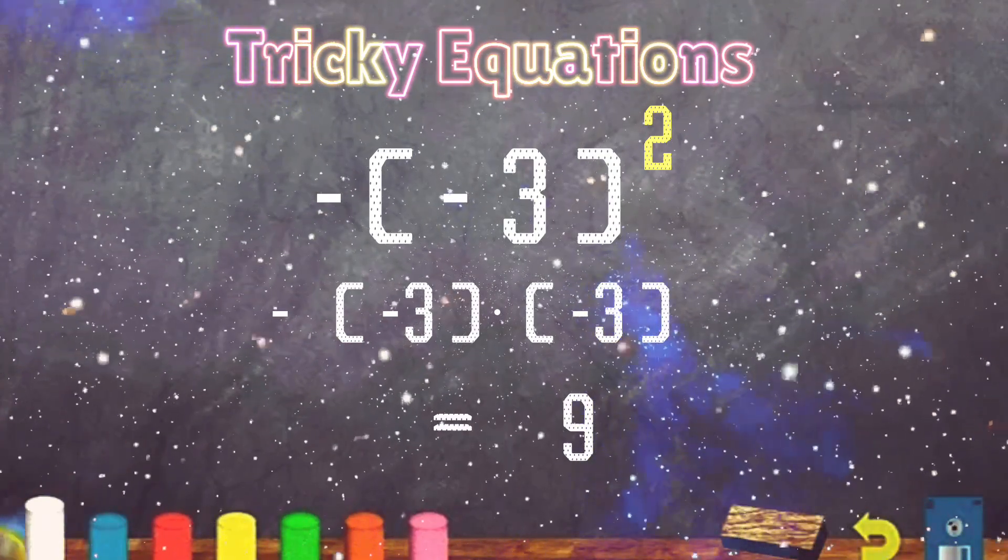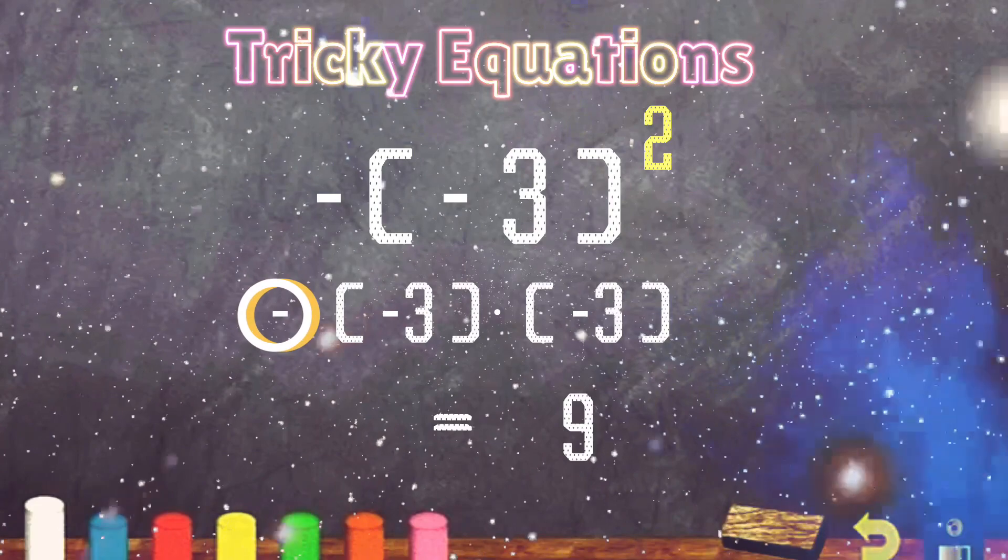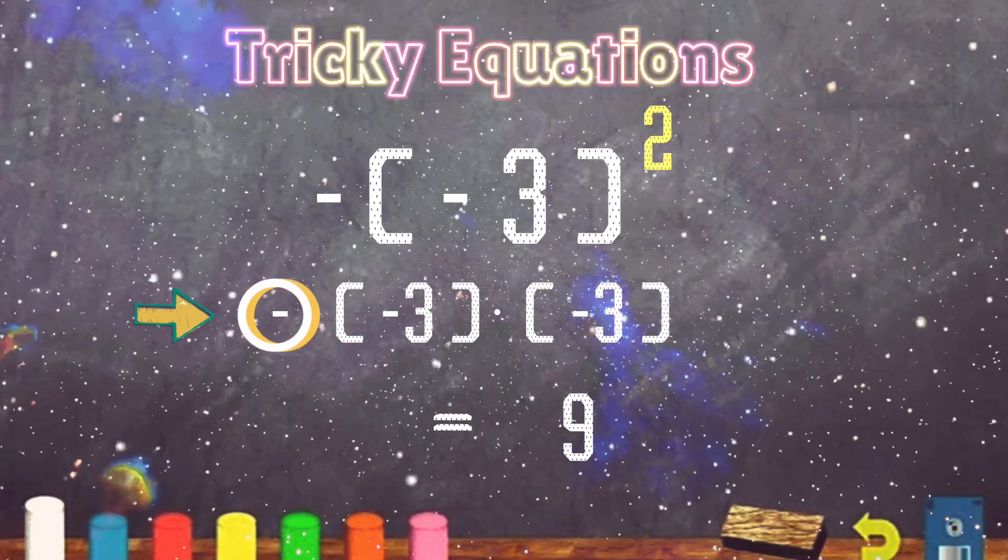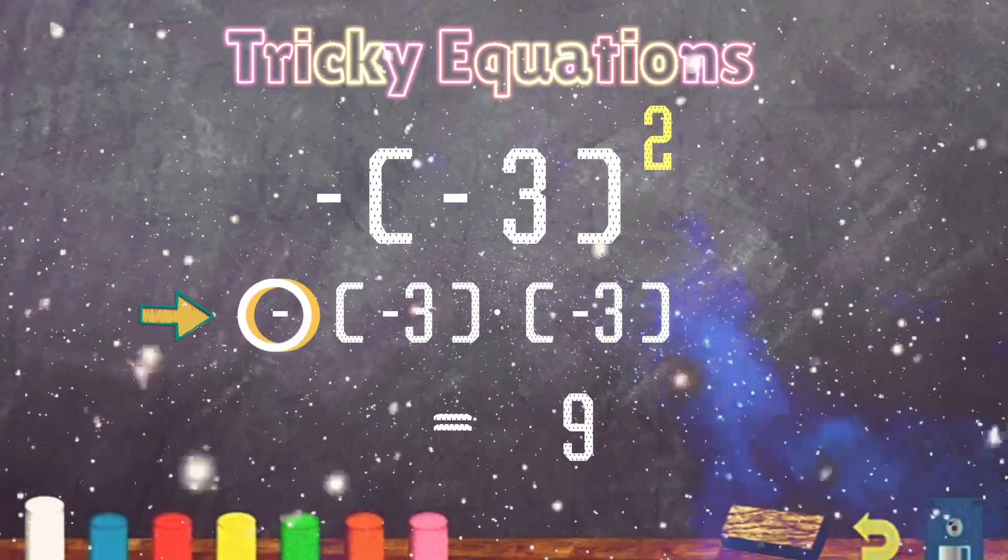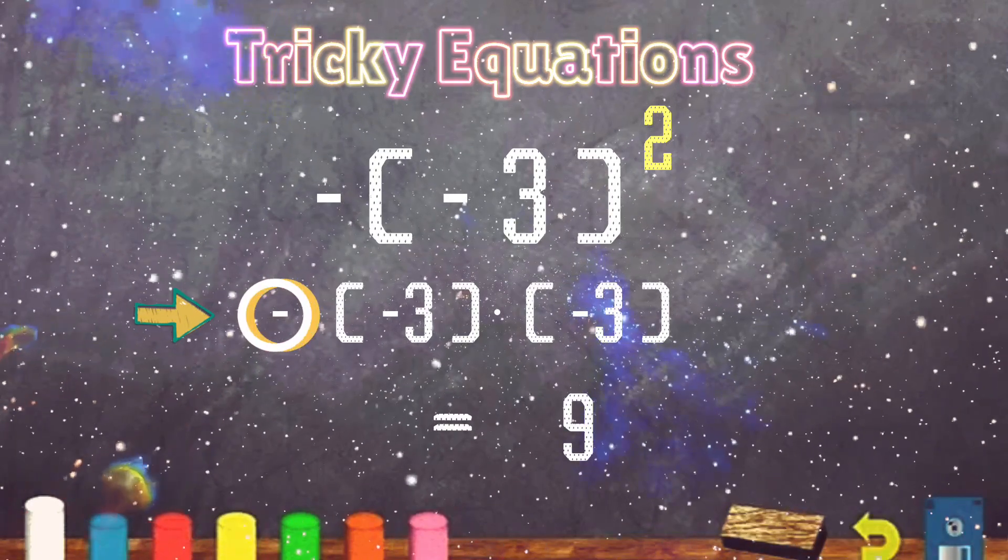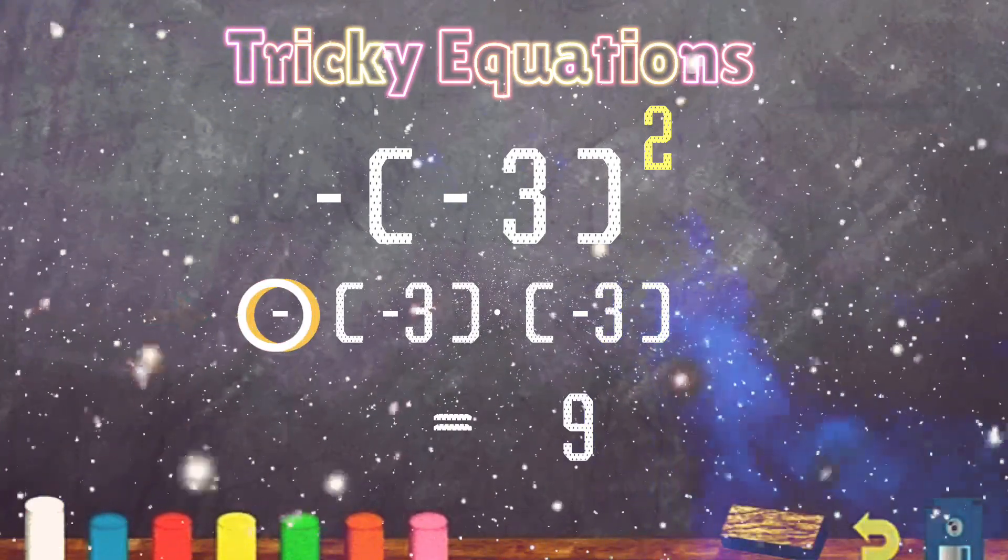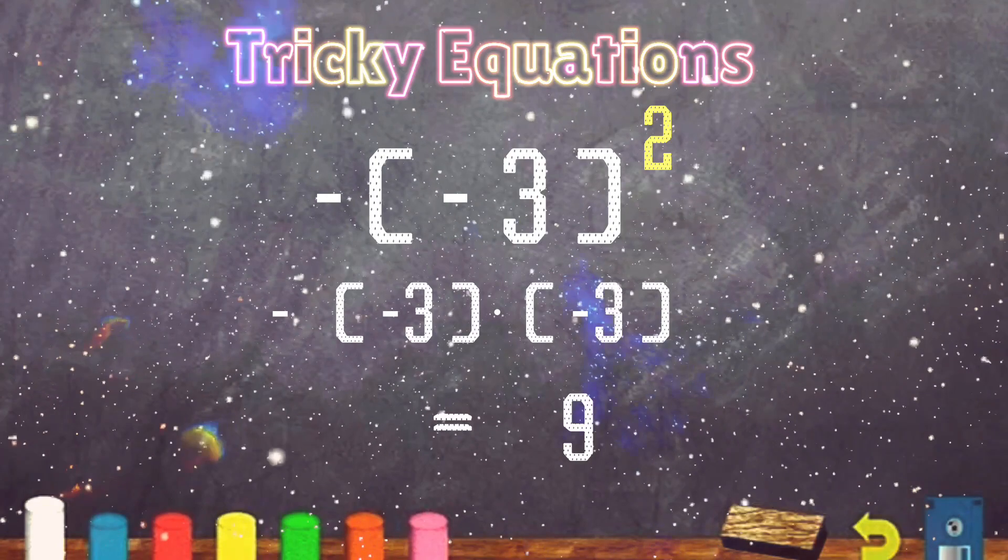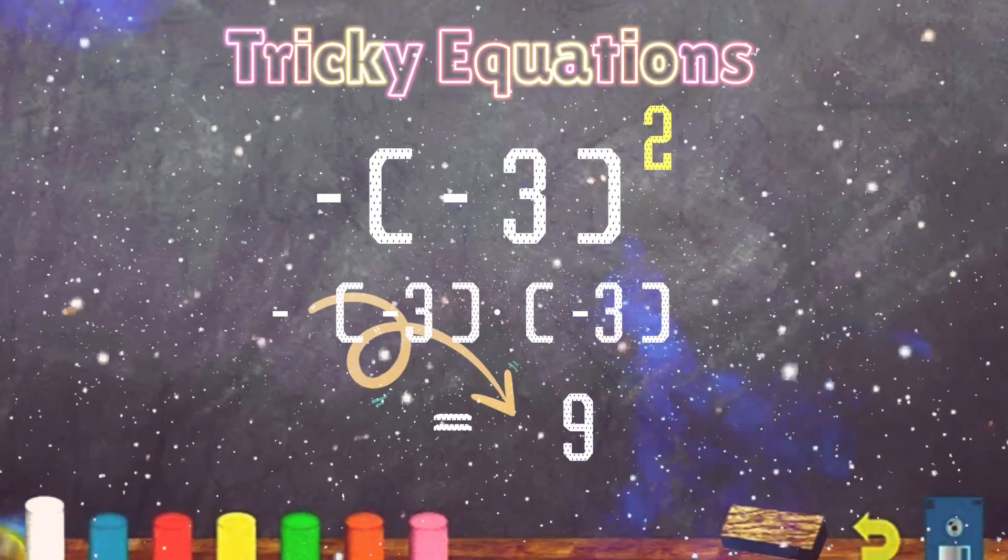Now we still have the negative sitting on the outside of the parentheses. What happens when we multiply a negative by a positive? We get a negative. So now that positive 9 changes to a negative 9. And that is our answer.